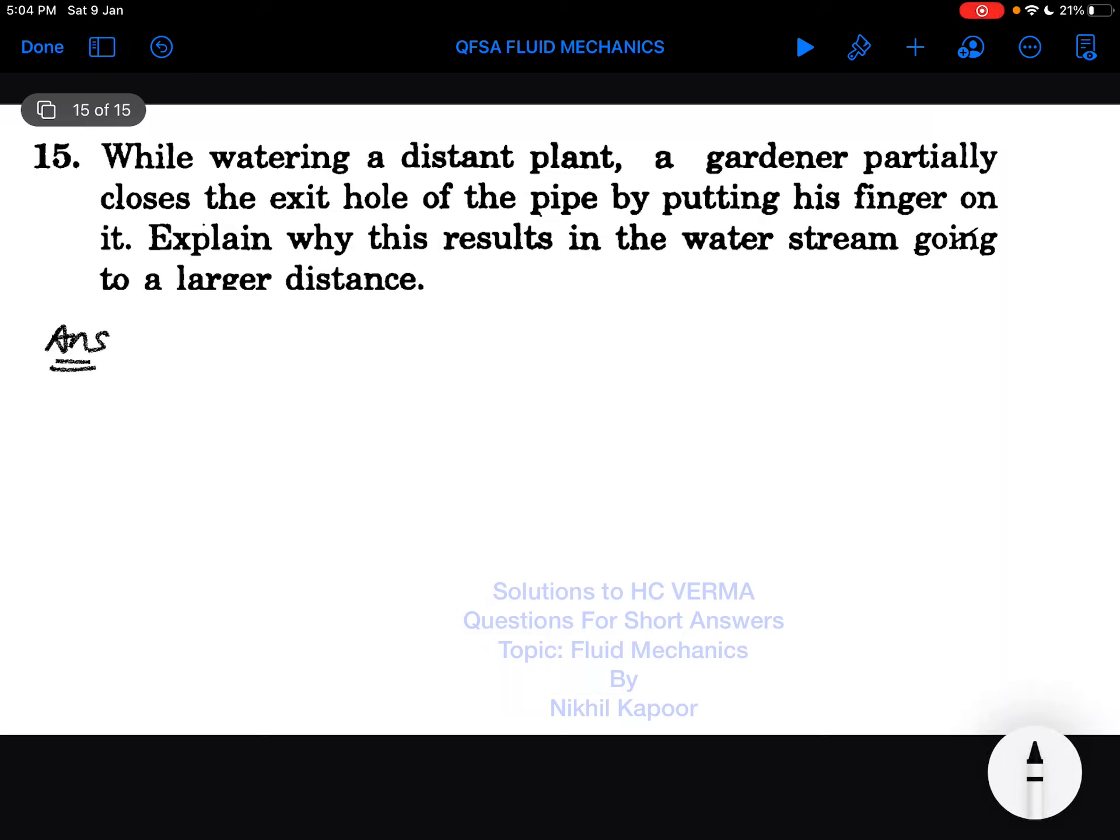Let's start with the 15th question. While watering a distant plant, a gardener partially closes the exit of the pipe by putting his finger on it. Explain why this results in the water stream going to a larger distance.